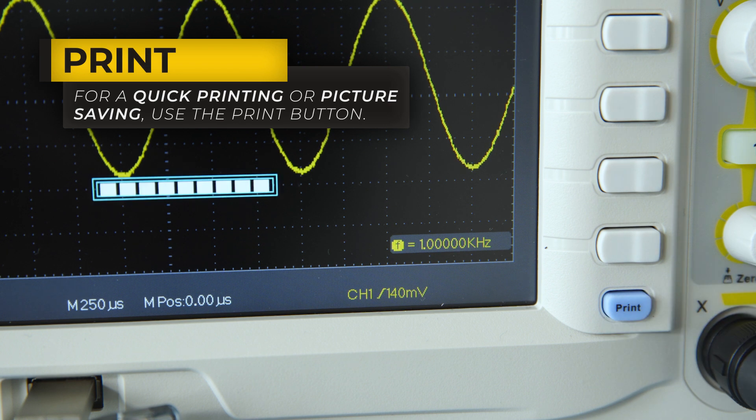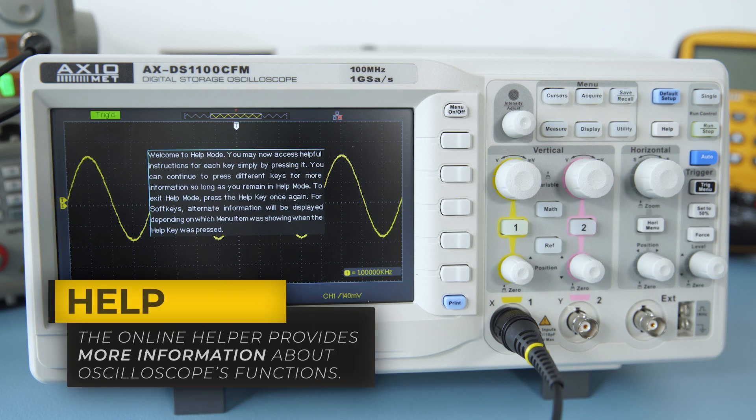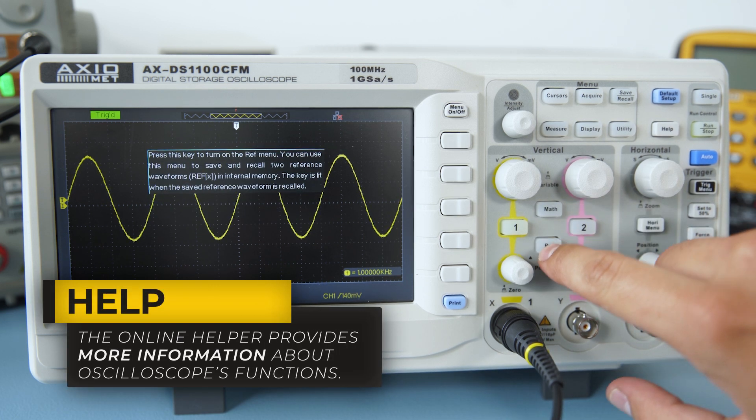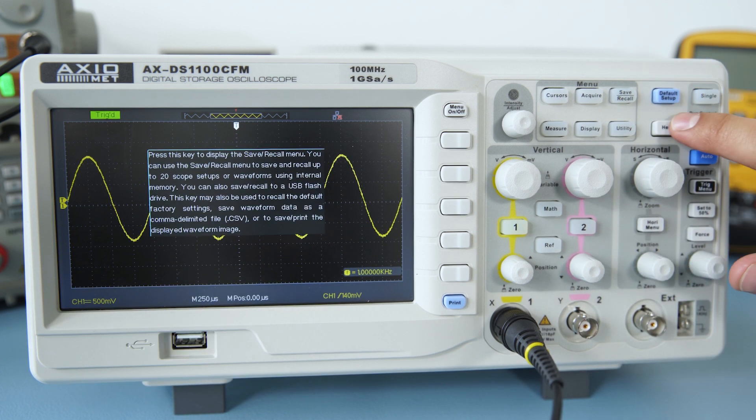For a quick printing or picture saving, use the Print button. If there are any doubts about functions or buttons, the Oscilloscope has an online helper. Simply press the Help button and then any other key in order to get more information about its function.